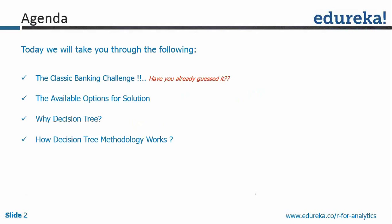In today's session, scheduled for one hour, we will be discussing the classic banking challenge — fraud detection within a bank. If I give you a loan, what is the chance that you might default? What solutions are available? Do we need to use decision tree only, or can we use any other solution when given such a challenge of detecting fraud within the banking sector?